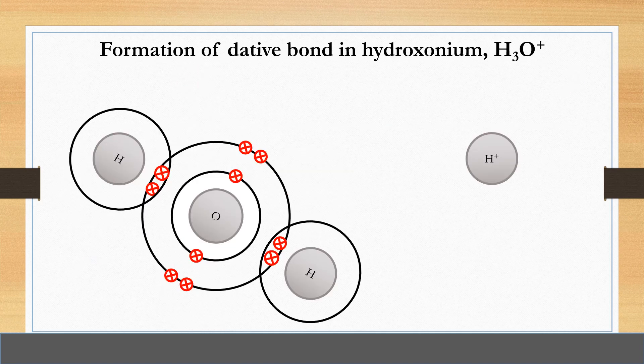This one is formation of dative bond in hydronium ion. Oxygen and hydrogen in water molecule achieve stable duplet and stable octet electron arrangement.